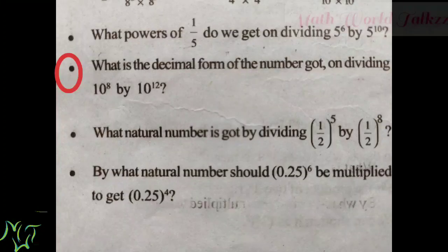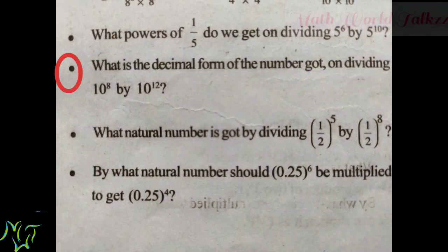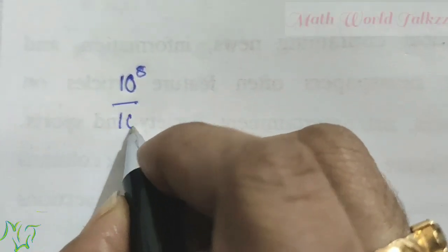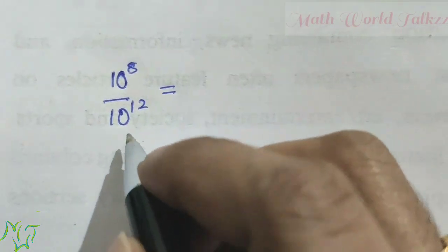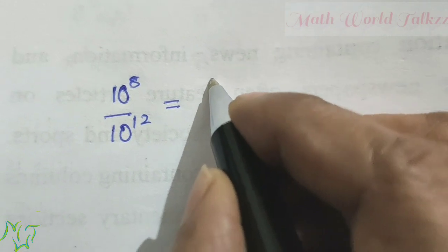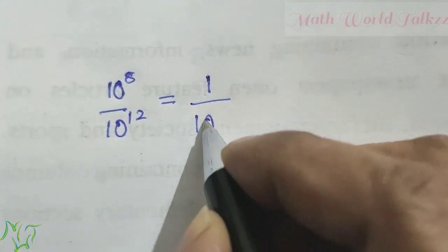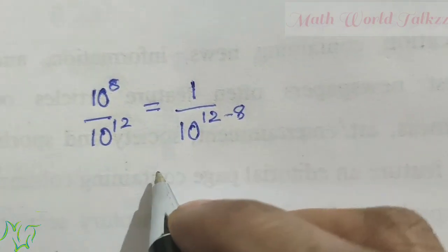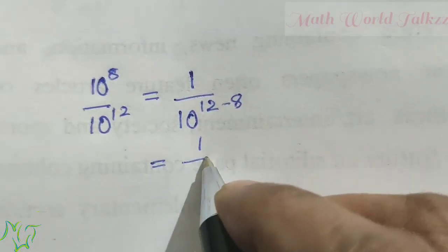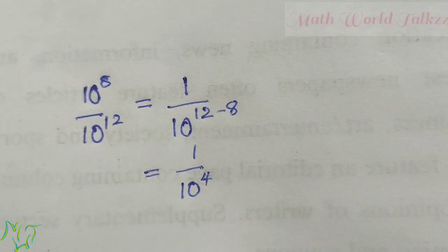Next question: What is the decimal form of the number got on dividing 10 raised to 8 by 10 raised to 12? We want to divide and express the final answer in decimal form. We use the second division rule because the power in the denominator is bigger: 1 by 10 raised to 12 minus 8, equal to 1 by 10 raised to 4.